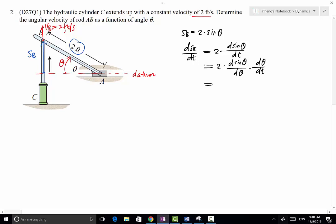The left-hand side, dS_B/dt, simply equals V_B. That is the linear velocity, by definition, of point B. The right-hand side, we have d(sin θ)/dθ equals cosine theta, and dθ/dt equals omega, that is omega_AB.